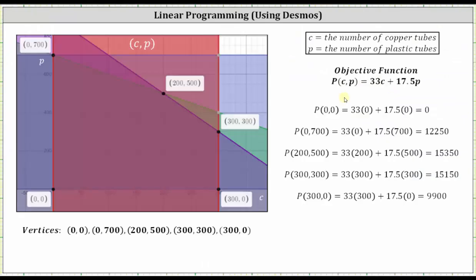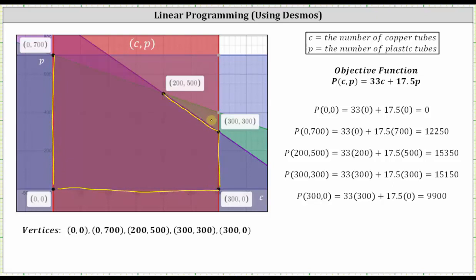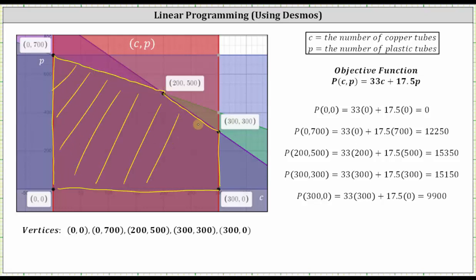Going back to our work, I've copied the graph on the slide. The feasible region is enclosed by the pentagon with five sides. Remember each ordered pair is in the form C comma p. Now we evaluate the profit function using the five ordered pairs, which I've already done here to save some time.